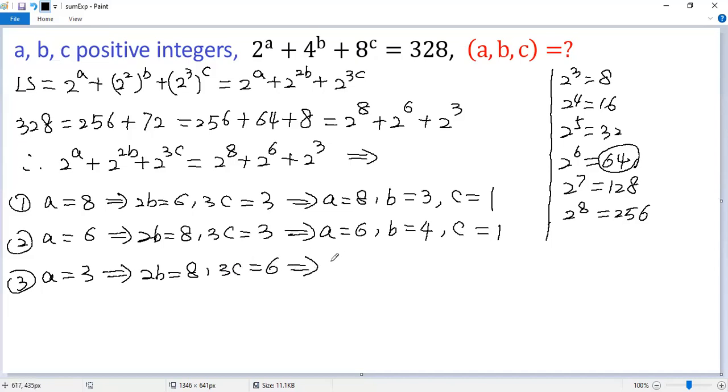So the third solution would be a equals 3, b equals 4, c equals 2. So we get three solutions to the given equation.